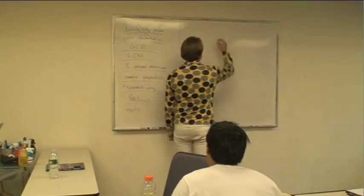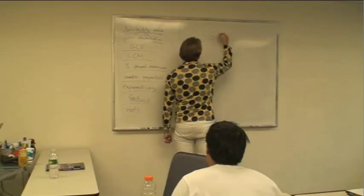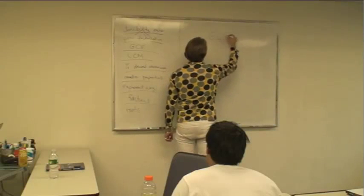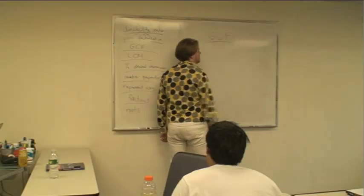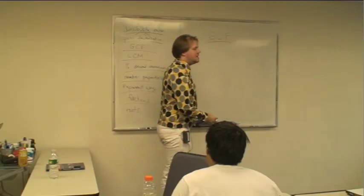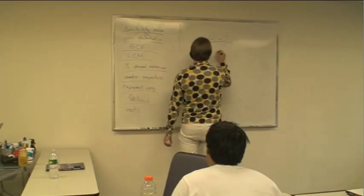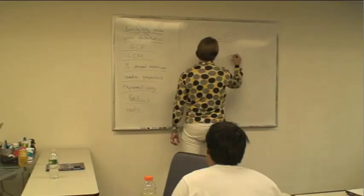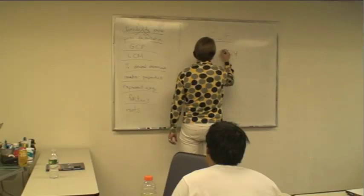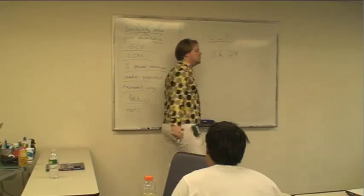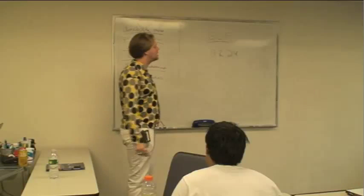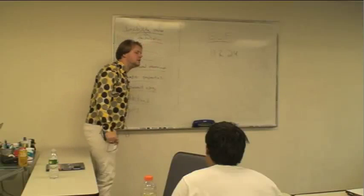Greatest common factors — are you familiar with this? What is the greatest common factor? If I have two numbers, let's say, for example, 18 and 24, can someone explain to me what the greatest common factor is and how I find it?